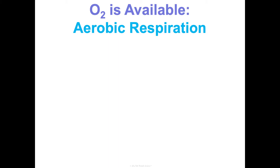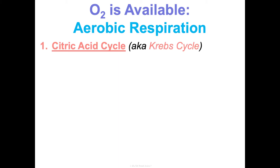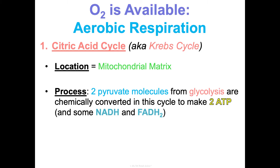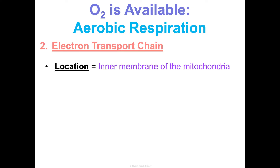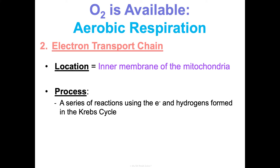If oxygen is available, aerobic respiration begins. The first step is the citric acid cycle, also known as the Krebs cycle, named after the guy who figured it out. It happens in the mitochondrial matrix — the fluid part of the mitochondria. We take those two pyruvate molecules from glycolysis and chemically convert them in this cycle to make two ATP and some NADH and FADH2, charging up these energy-carrying molecules. We also release CO2 as a waste product.